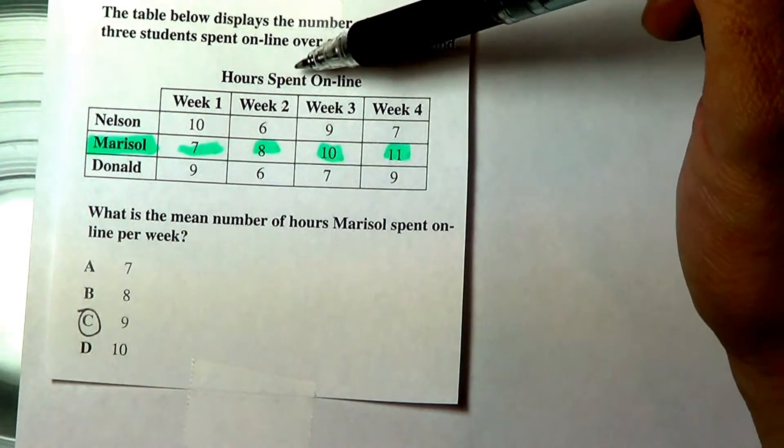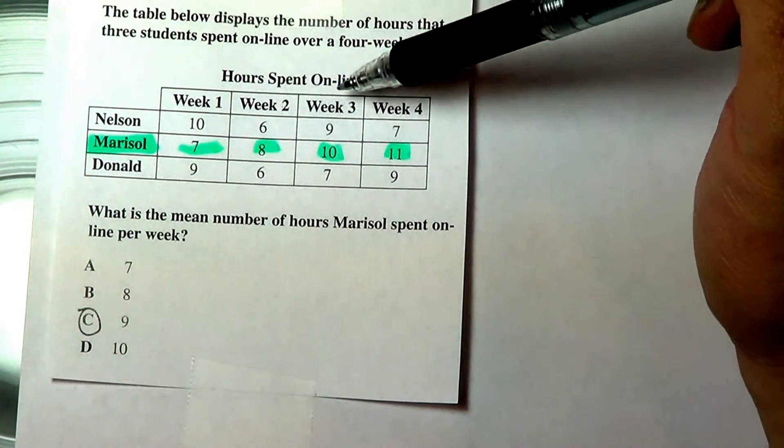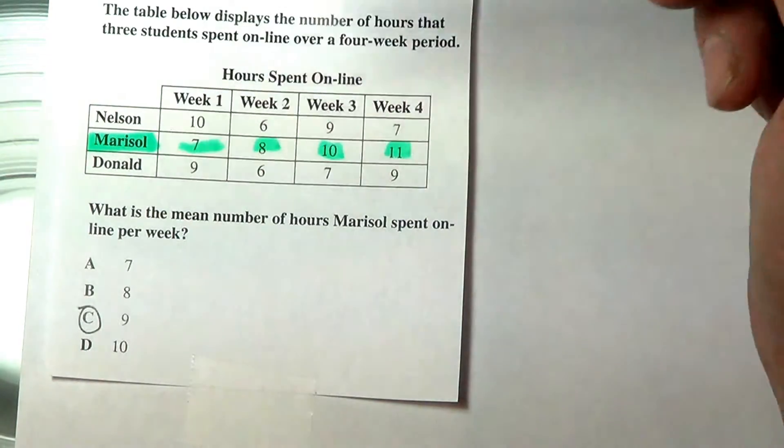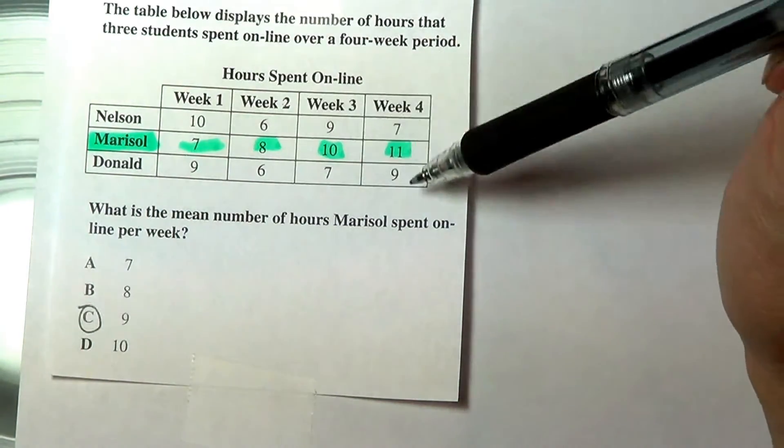Okay, so on top it says hours spent online weeks one, two, three, and four, and it gives you the different names of students: Nelson, Marisol, and Donald, and then the number of hours they spend each week.